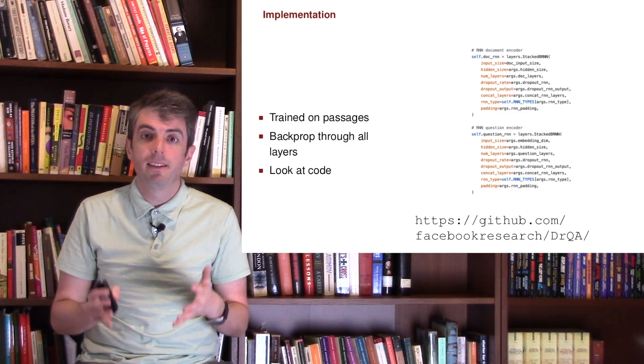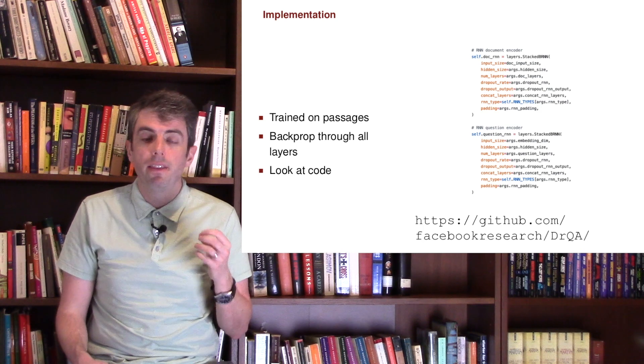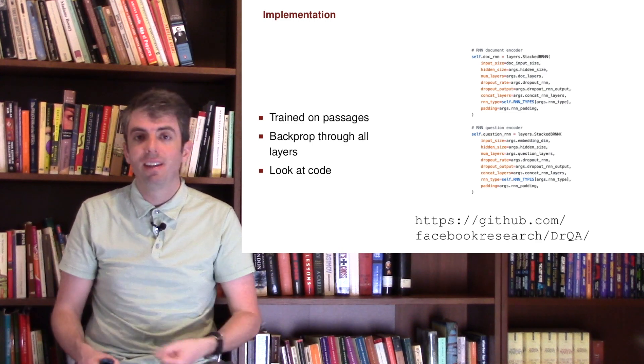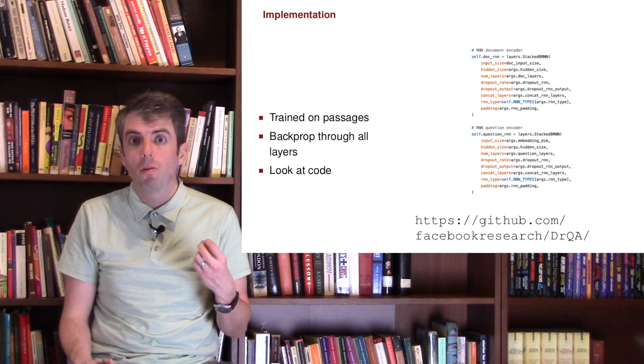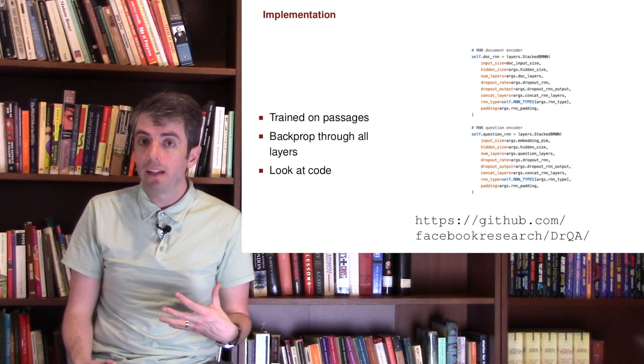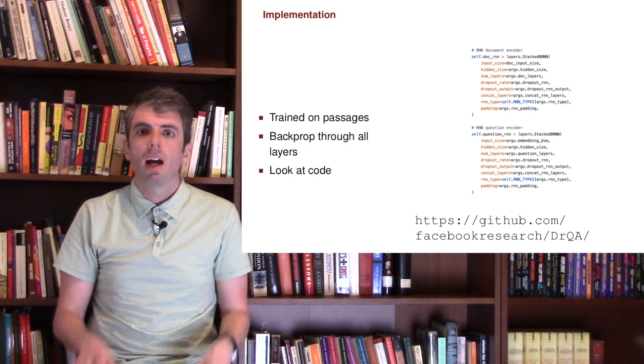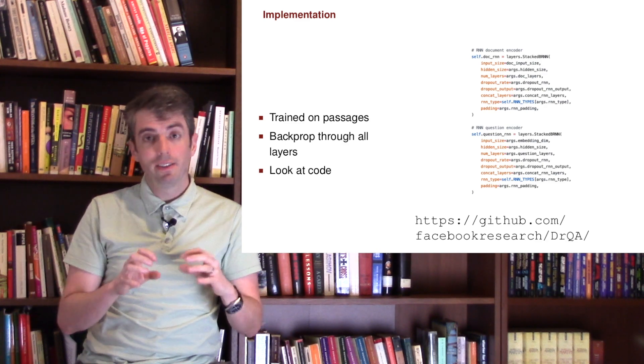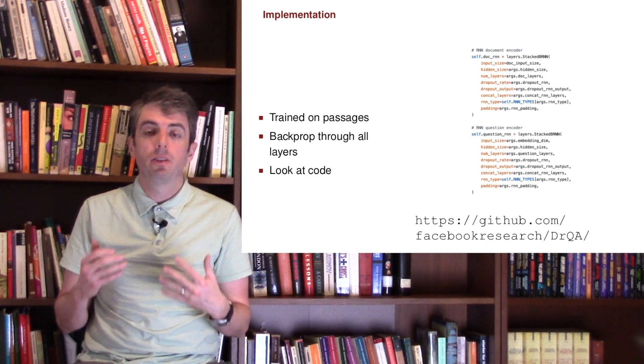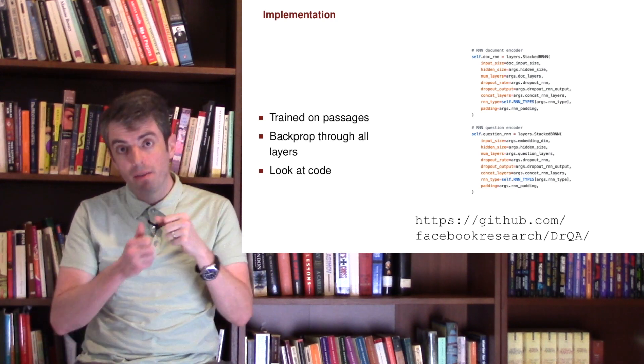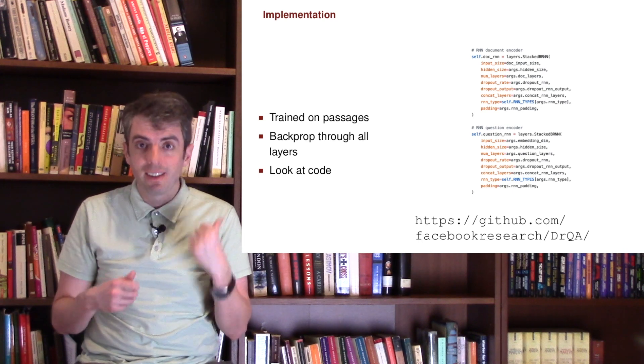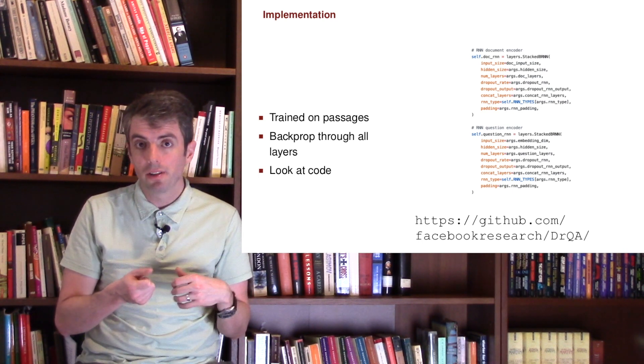The model I talked about is DRQA - document reader question answering. This can be trained on passages from datasets like SQUAD, and you backprop through all of the layers to learn the p's, the q's, and all the associated weights that generate those vectors. There's a very nice implementation of this available that you can look at. It's implemented in PyTorch - it should be fairly familiar to you at this point. I wanted to talk about this model because it's a relatively simple model that has many of the features of modern machine reading systems. It's a good starting point if you want to add in additional features. The creation of the vectors that feed into the passage representation could be augmented to encode additional information that you think is relevant, and there's this nice implementation you can expand in the latest version of PyTorch.